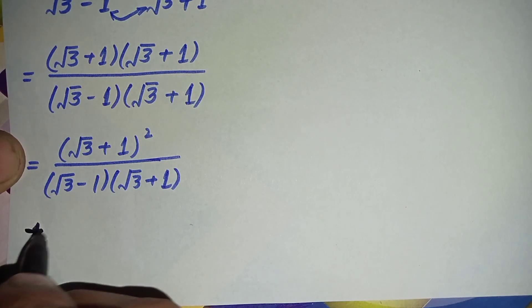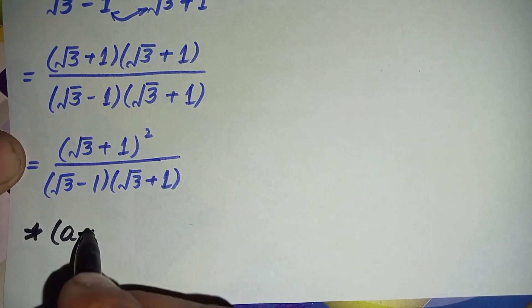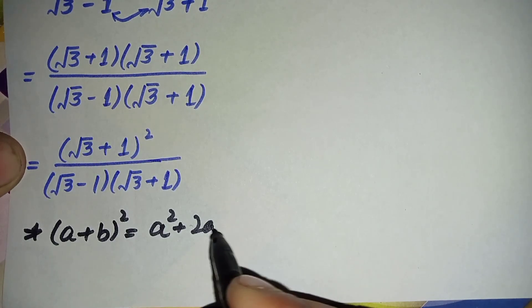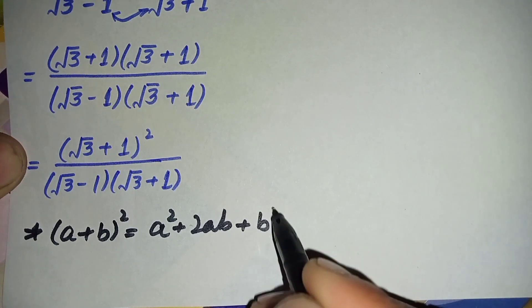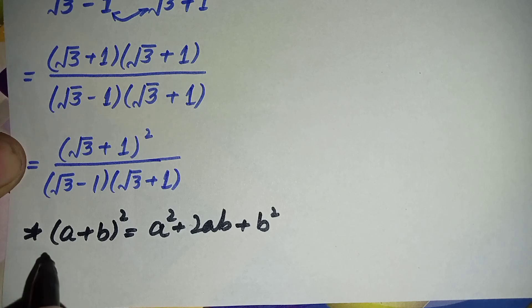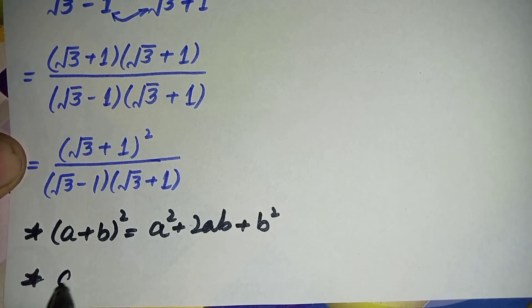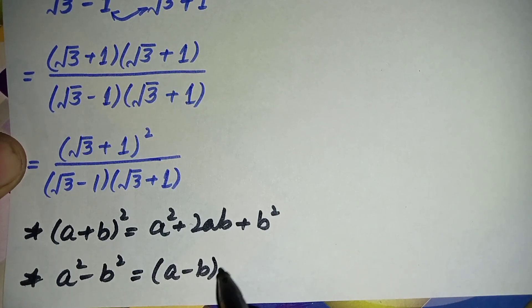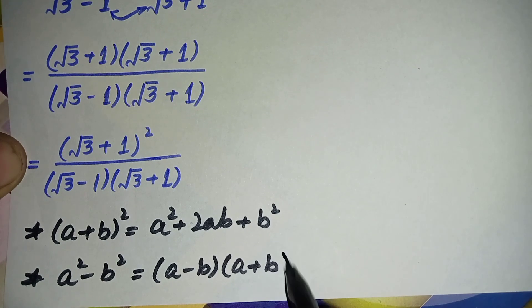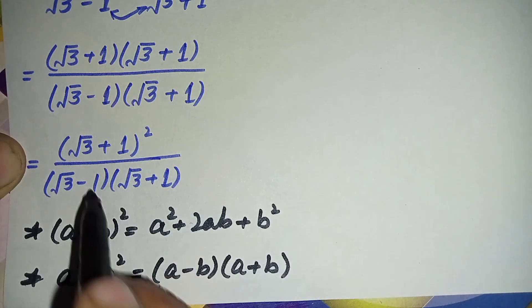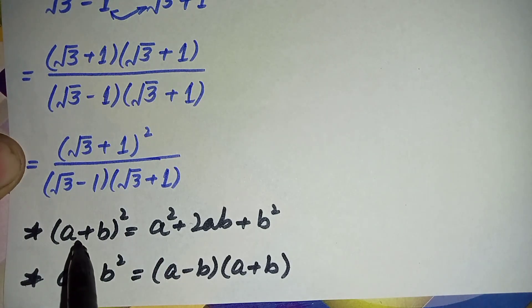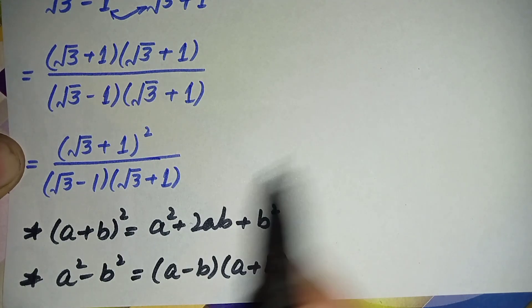Here in the numerator and denominator we will use two different algebraic identities. In the numerator we will use: a plus b whole square equals a squared plus 2ab plus b squared. In the denominator we will use: a squared minus b squared equals a minus b times a plus b. We will change the numerator to the first form and the denominator to the second form.